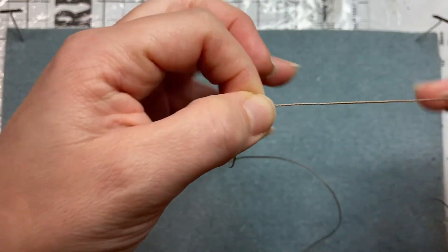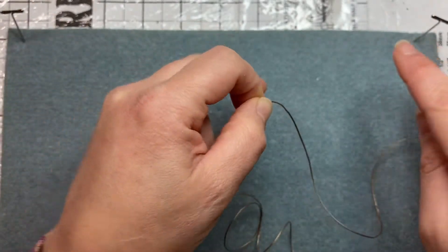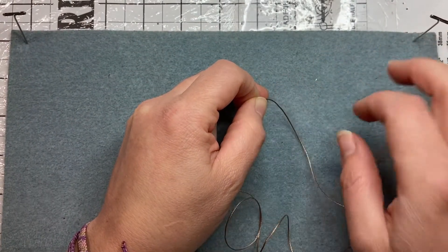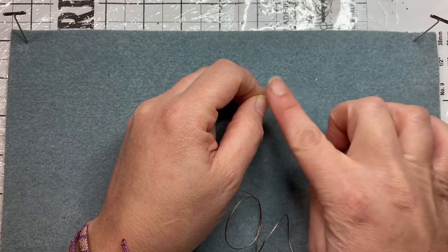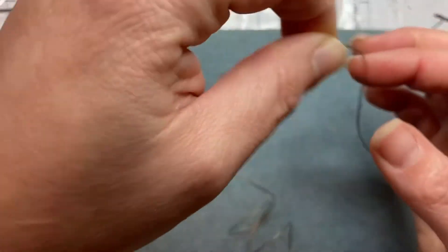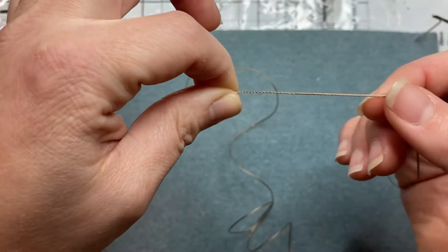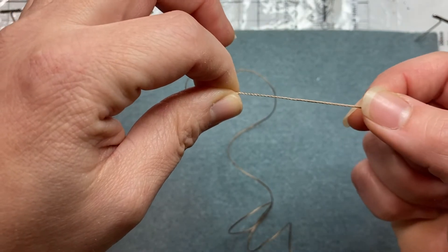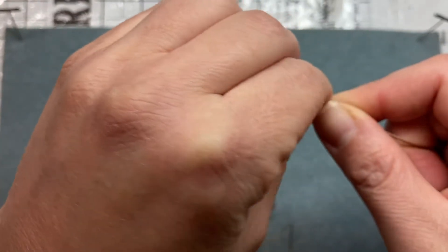And then once you find the center you just want to create slip knots on either side. And that slip knot is just so you can tack down onto your board and work the next cord onto this cord. So here's the center.